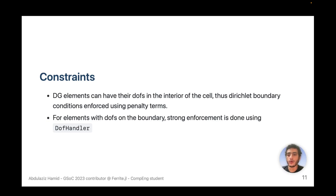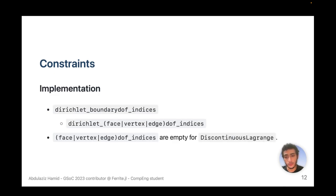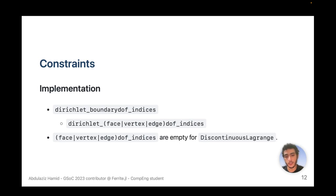For constraints, DG elements can have degrees of freedom on the interior of the cell or on the boundary. If the degrees of freedom are on the interior, Dirichlet boundary conditions are enforced using a penalty term. If they are on the boundary, we can use the DOF handler the same way as in the continuous case, but we needed modifications because face, vertex, or edge DOF indices are empty for discontinuous Lagrange interpolations. We added Dirichlet boundary DOF indices which fall back to the regular DOF indices for the continuous case but are dispatched for the discontinuous case.